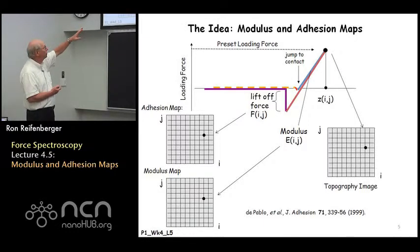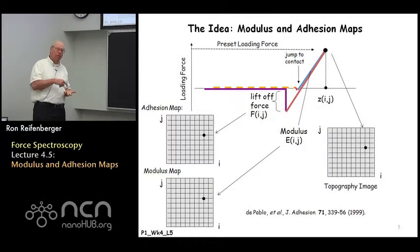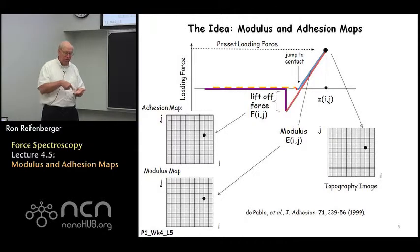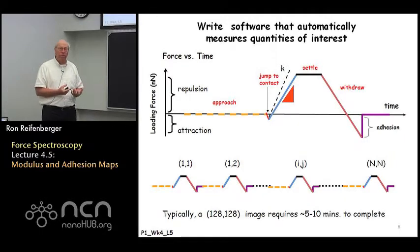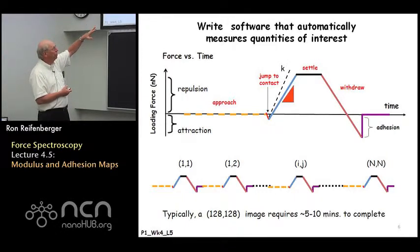Simultaneously, there's no reason you couldn't measure the slope of the force versus displacement curve — that slope is related to the modulus of the sample at that particular point. So you could imagine making a modulus map simultaneously with the topographic map. And by measuring the lift-off force when the tip is at a particular point on the substrate, you could also make an adhesion map as the sample is scanned. All you have to do is write software flexible enough to pull relevant information off the force versus displacement curve — plotted as a function of time — in a periodic and systematic fashion.